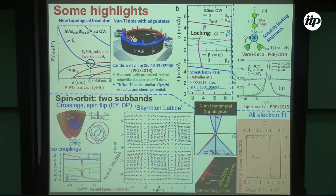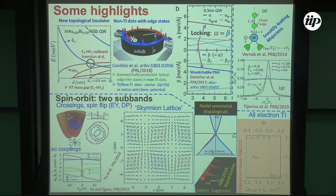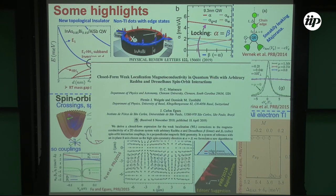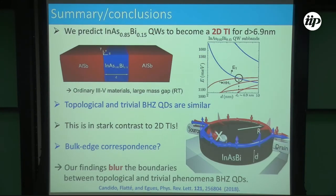I'll leave you with this busy slide again to highlight the kinds of things we've been doing: the Majorana stuff, the persistent spin helix, the skyrmion lattice — that's actually a very interesting result where we are able to produce skyrmions in a non-interacting system, which usually happen only in interacting systems like chiral magnets. Together with the result I just showed you, it's an interesting system in which you can look for topological phenomena in ordinary non-interacting systems. Also recently we studied weak localization. With that, I'll put my conclusion again. Thank you very much.